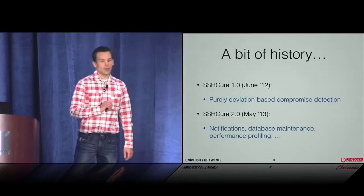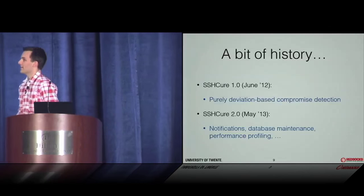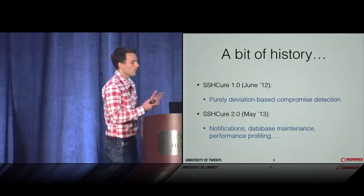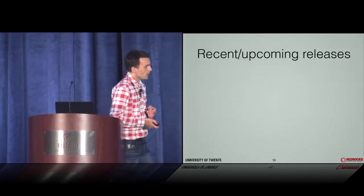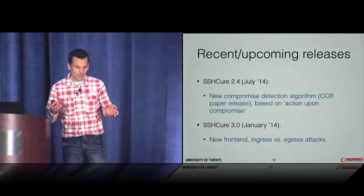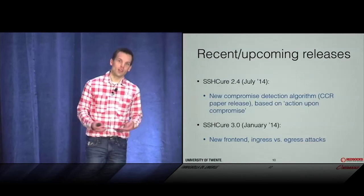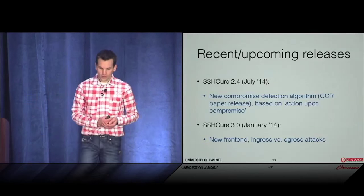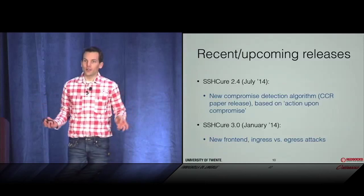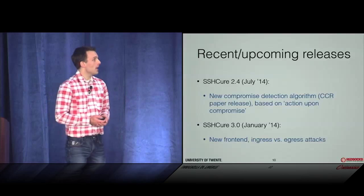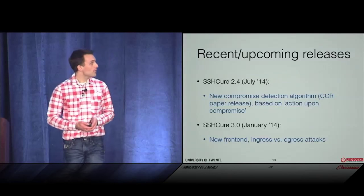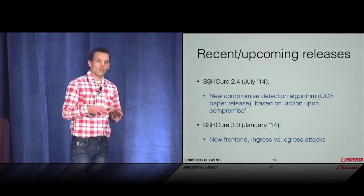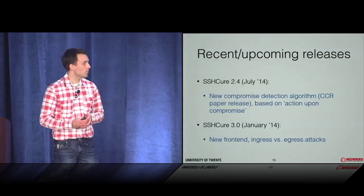Roughly one year later we moved to Shikure 2.0, with notification support and a more mature tool. Then as the user base grew, we got more reports about false positives. Users told us the tool wasn't accurate enough, which made us think about how to do it better. That is what we did in Shikure 2.4, released in July 2014 — the new, cool stuff that is basically the main contribution of this presentation.